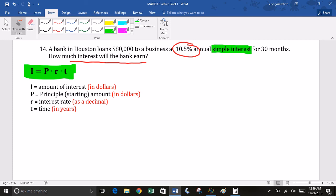I is the total amount of interest, and that's in dollars. P stands for the principal or the starting amount, also in dollars. Lowercase r is the interest rate. Now, that has to be a decimal. So 10.5% would be 0.105, and T is the time. Time has to be in years.